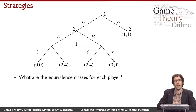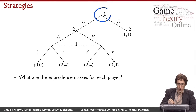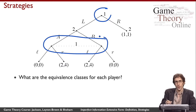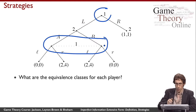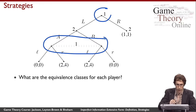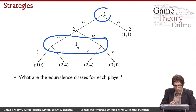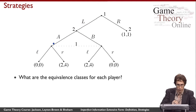In this example game, player one has two different equivalence classes — we use a dotted line to connect choice nodes belonging to the same equivalence class. Player one moves first; if he goes right, the game ends and each player gets a payoff of one. If he goes left, player two gets to choose A or B. Then player one moves a second time, but without observing player two's move, so he must take the same action regardless of which choice node he's at. Accordingly, if he chooses left, he goes left from both nodes.